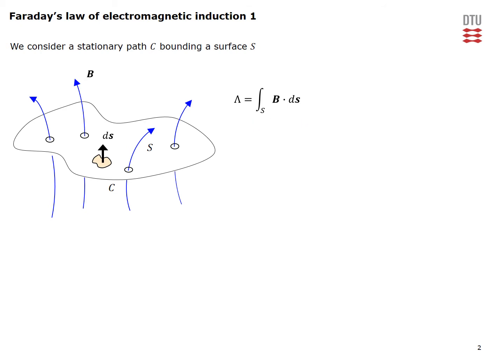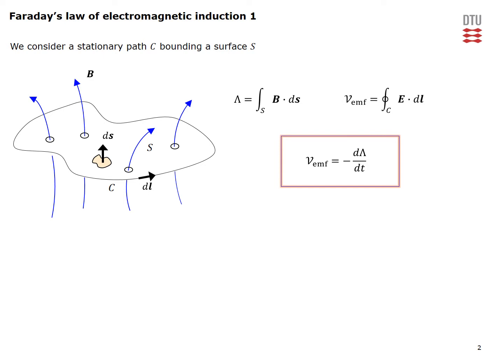What Michael Faraday discovered back in 1831 is that if this flux linkage through the loop changes with time, there will be an induced electromotive force along the path sketched. This induced electromotive force is given as the negative time derivative of the flux linking the loop. The induced electromotive force is the circulation integral of the electric field along this path, so Faraday's law tells us that changing magnetic flux induces an electric field, which then gives rise to the electromotive force.